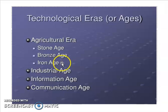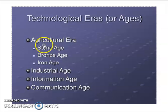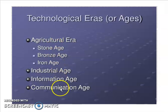The agricultural era is divided into three ages: the Stone, Bronze, and Iron Age. In this era, people were busy making simple tools to survive — tools made of stone, bronze, and iron. The next era after agricultural is called the industrial era, then the information era, and the present age we have now is the communication era. These are the ages we will discuss this morning.